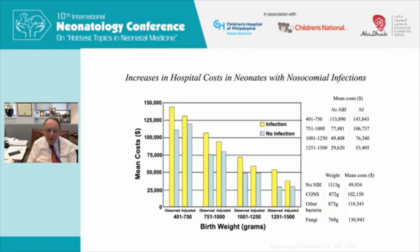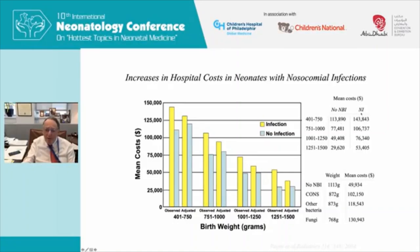This is the best study I've seen in terms of economics. It looked at the cost of intensive care in babies who have an infection — shown in yellow — versus babies who do not, broken down by birth weight groups. There are two sets of bars: observed and adjusted for confounding variables. At almost every birth weight category, babies with infection have a higher mean cost.